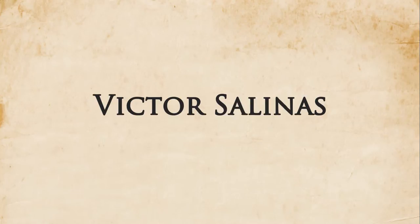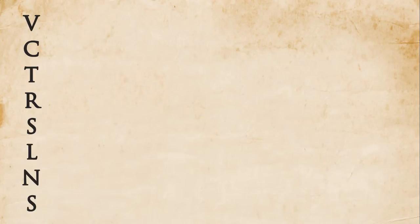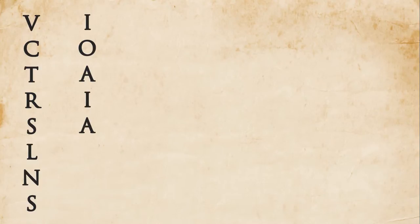I'm going to use my name — Victor Salinas — as an example of how to do this. The first thing I do is list all the consonants on one side of the page. So we have V, C, T, R, S, L, N, and S. Then on the other side of the page, I list all the vowels. So we have I, O, A, I, and A. If there are multiple repeats of the same letters, you still want to write those down.